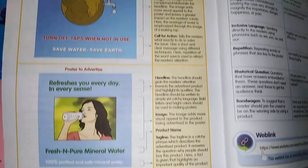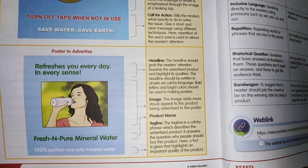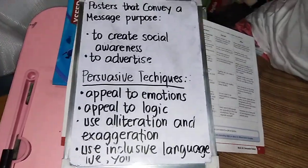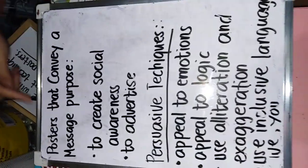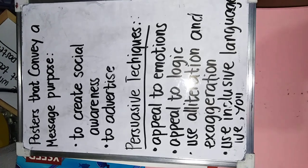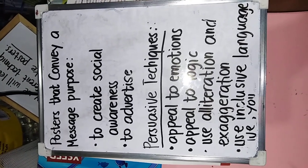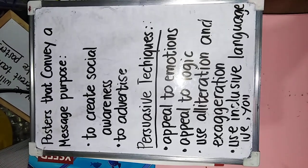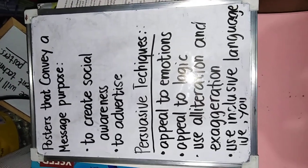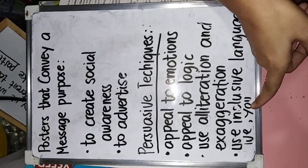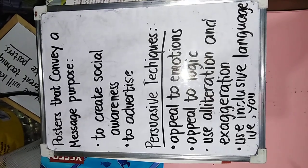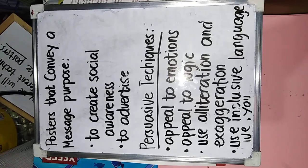How are persuasive techniques used in a poster that conveys a message? We can persuade readers by appealing to their emotions. We could also use logic and state facts as evidence to support the purpose — for example, a detail about an issue like water scarcity. We can use inclusive language with pronouns like you and we, which directly addresses readers.